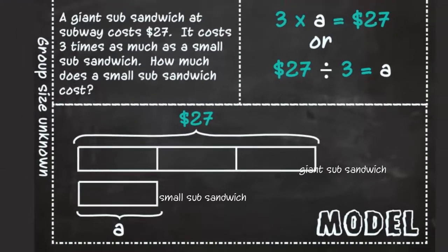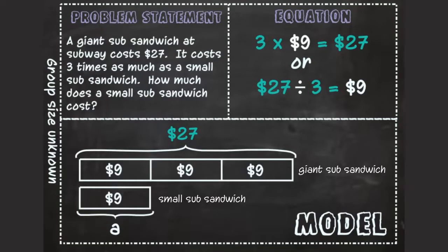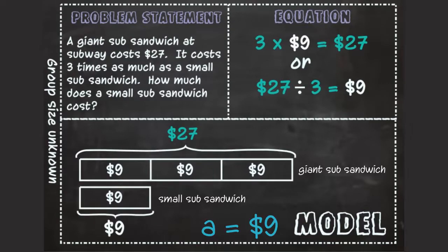If 3 times 9 equals 27, or 27 divided by 3 equals 9, then 9 is the unknown group size. If 9 is the unknown group size, then a equals 9.